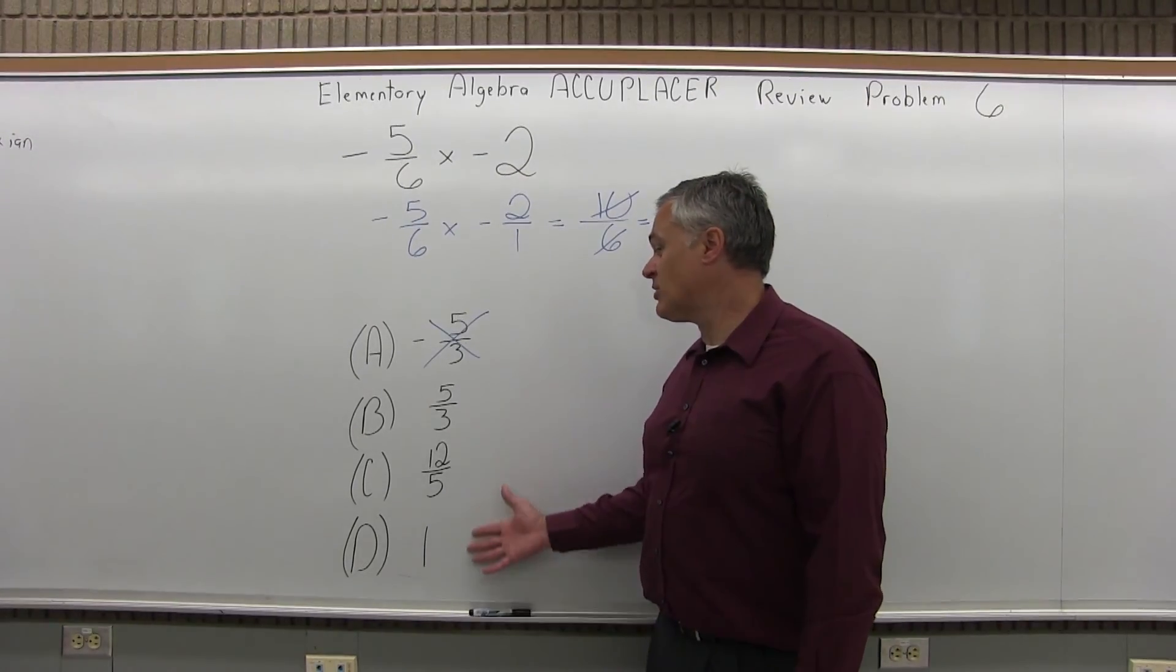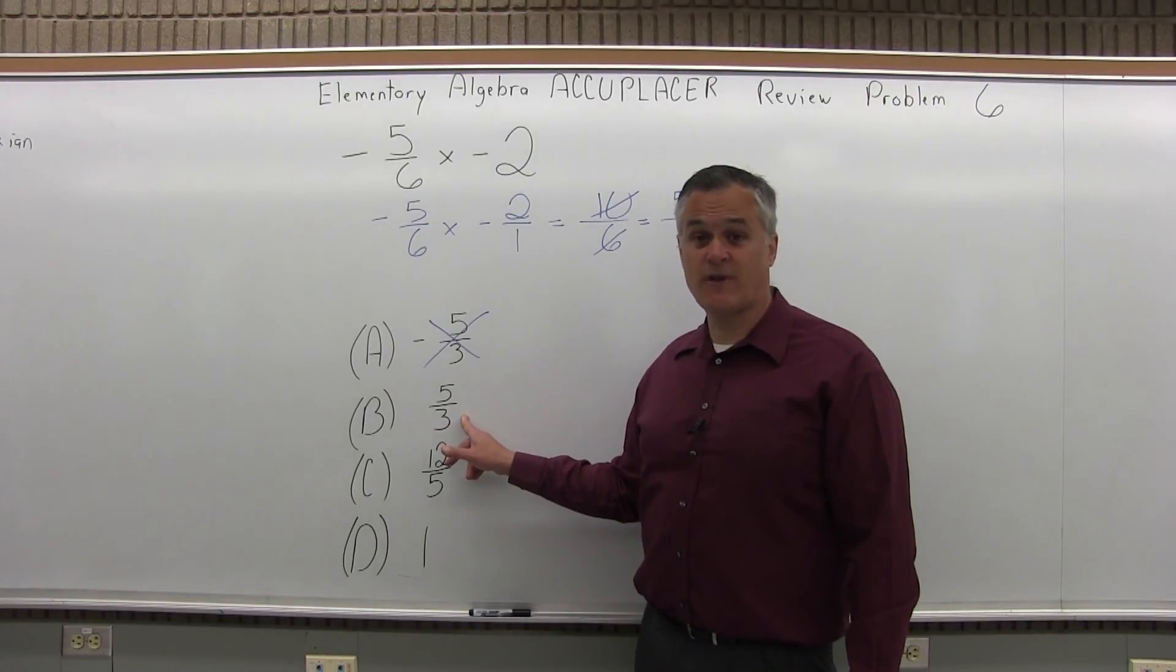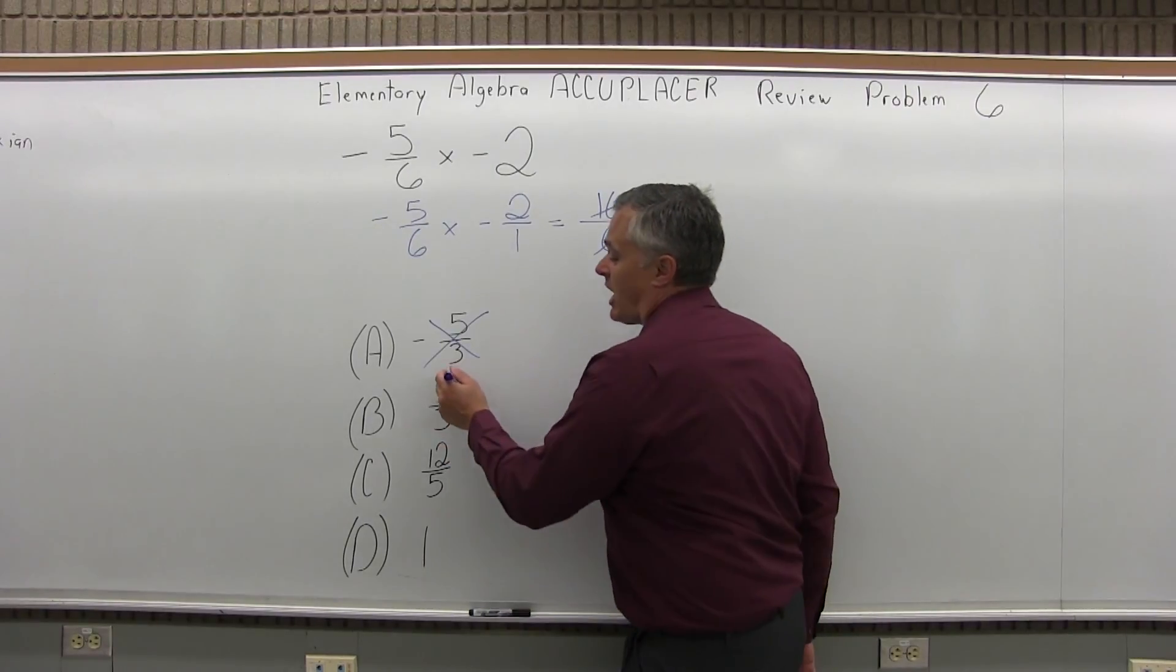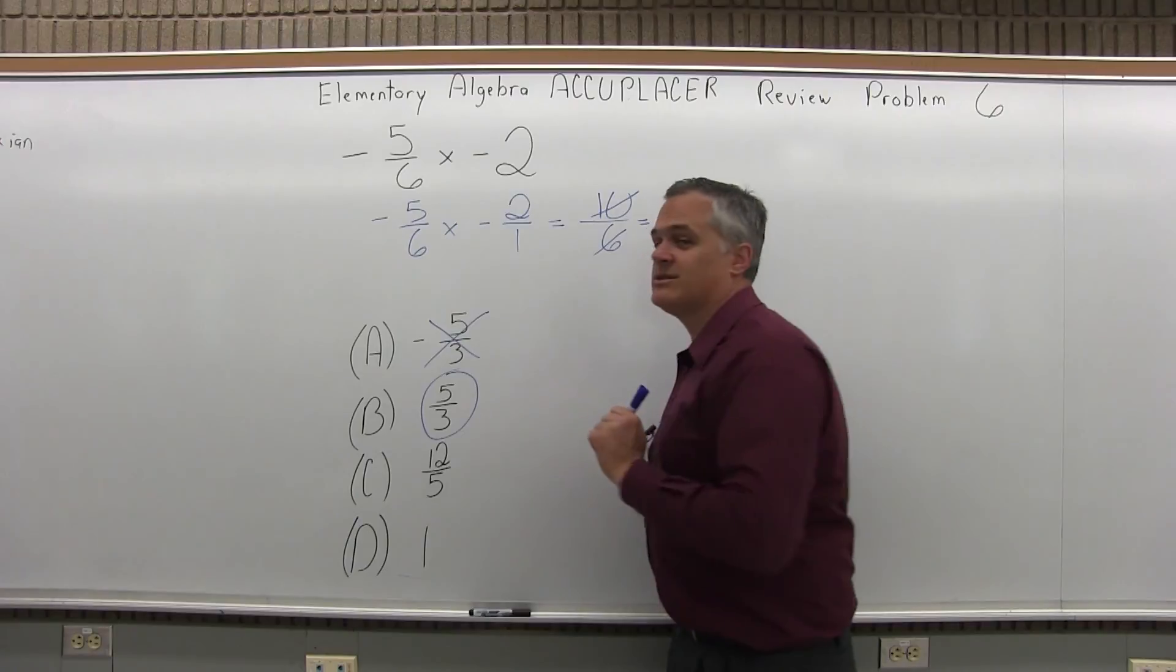Now if I check my possible options, one of them, sure enough, is 5 over 3. And that is option B. So that's the answer, B.